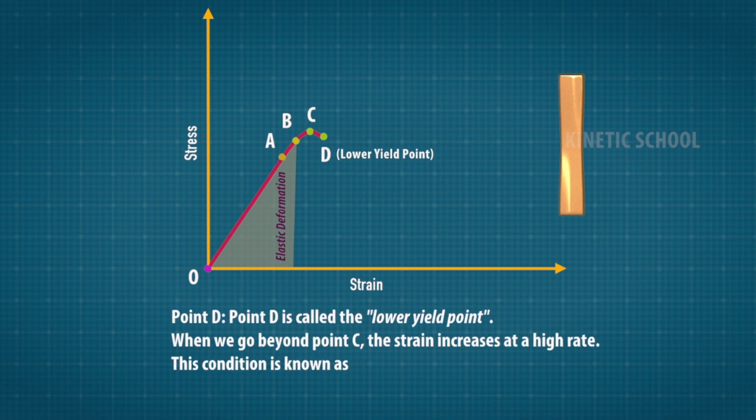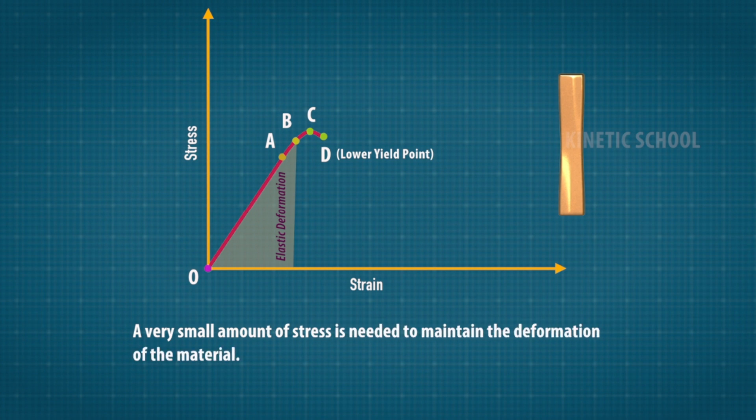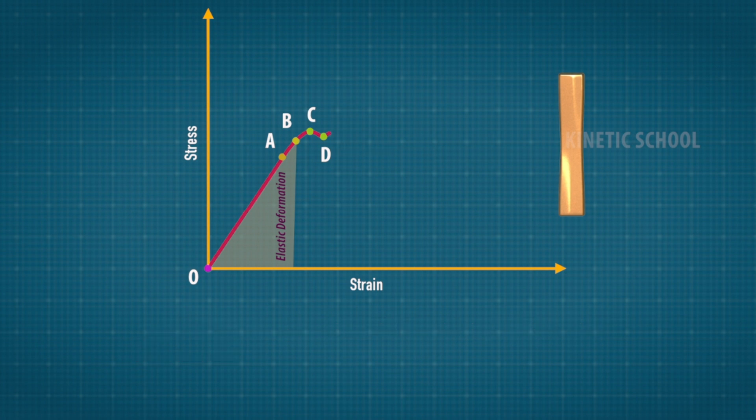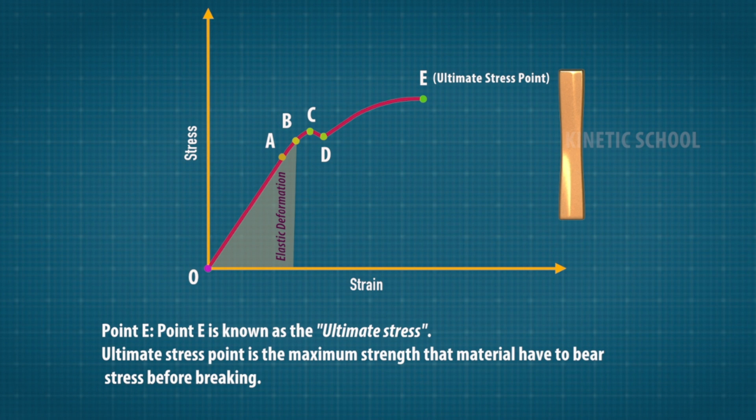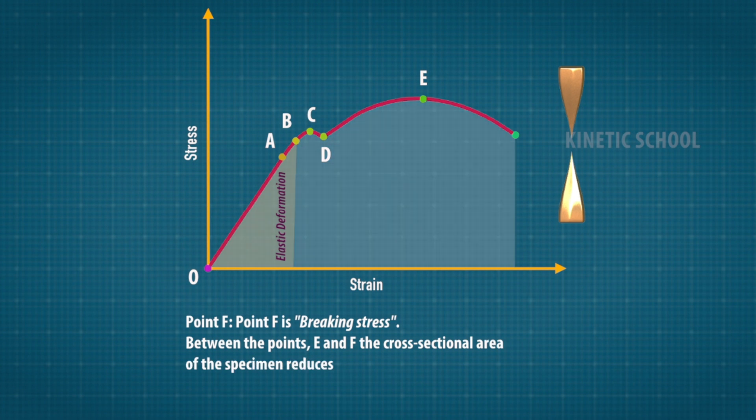Point D is called the lower yield point. When we go beyond point C, the strain increases at a high rate. This condition is known as plastic flow, where a very small amount of stress is needed to maintain deformation. Point E is known as the ultimate stress, which is the maximum strength that material can bear before breaking.